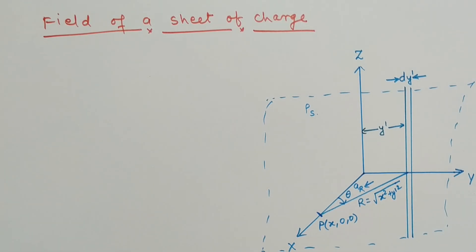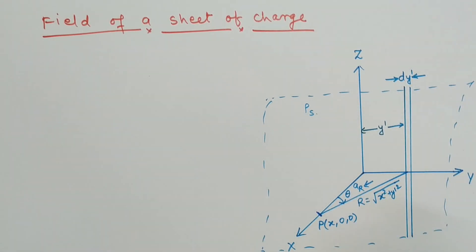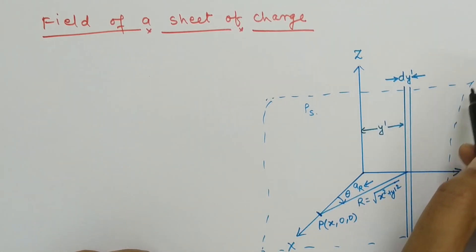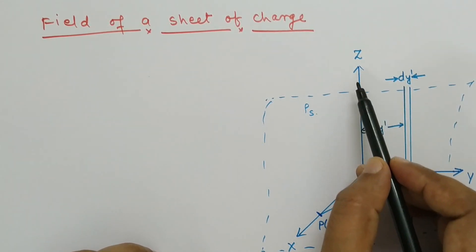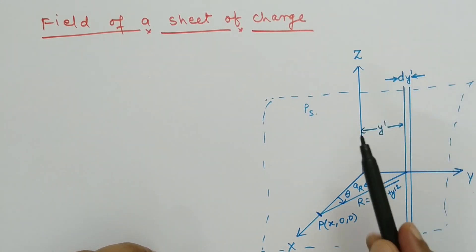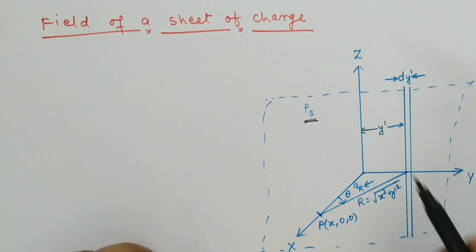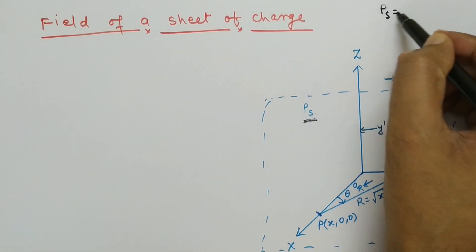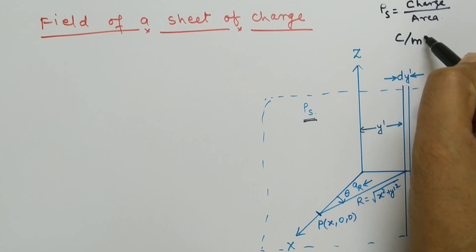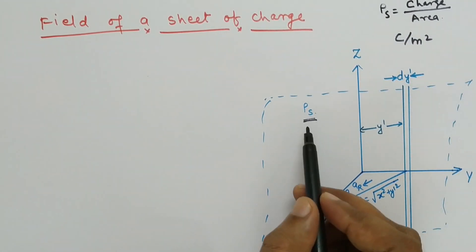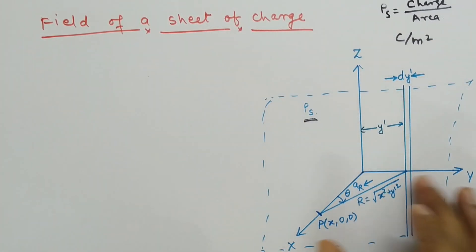Hello friends, welcome to my YouTube channel RF Design Basics. Today we are going to study the field due to an infinite sheet of charge. Let us consider an infinite sheet of charge kept in the YZ plane, having surface charge density ρs. The surface charge density is defined as charge per unit area, with units of coulombs per meter squared.